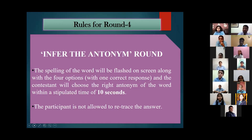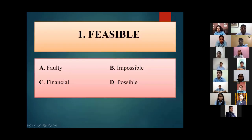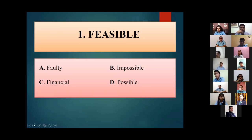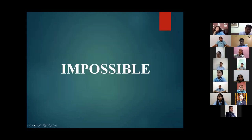Round four, first word for Gargi: 'Feasible'. Options are faulty, impossible, financial or possible. She answers 'impossible' — correct. Gargi gets full marks.